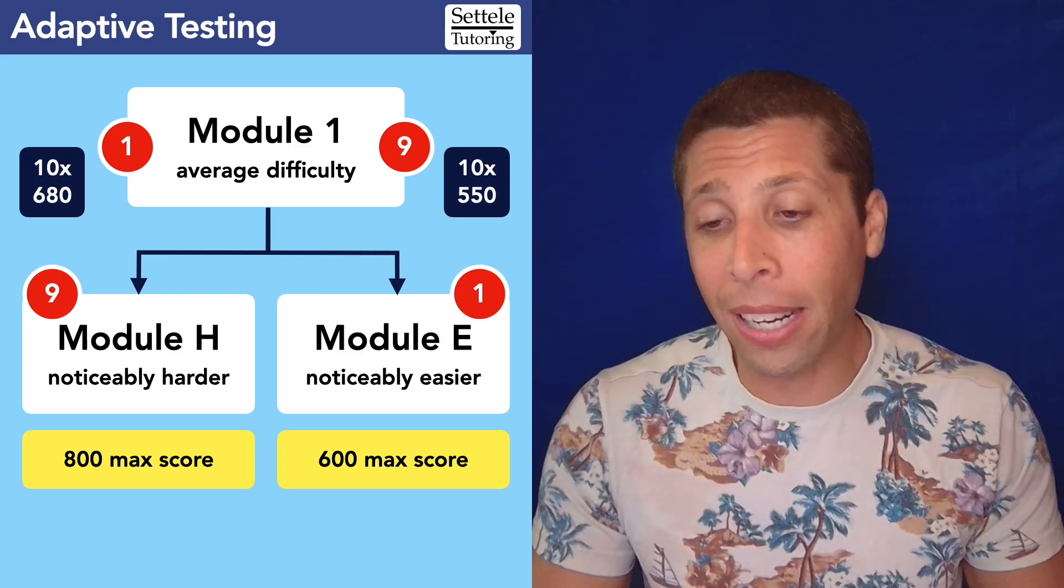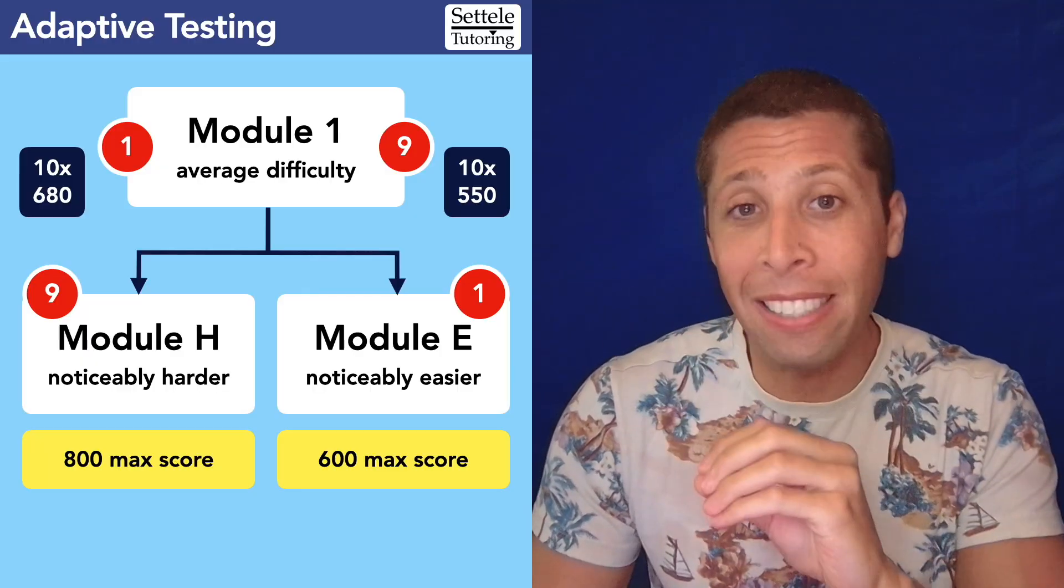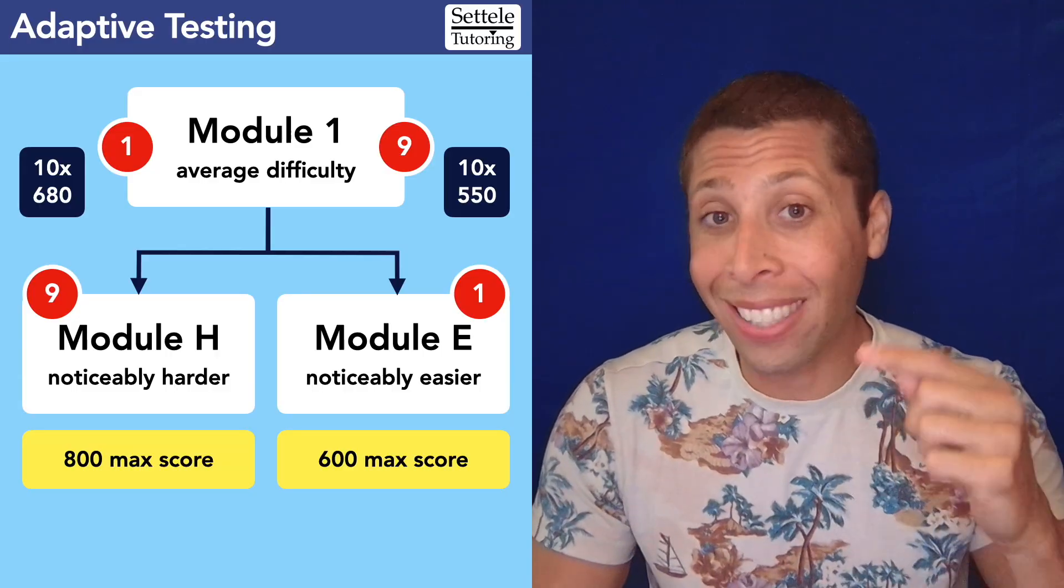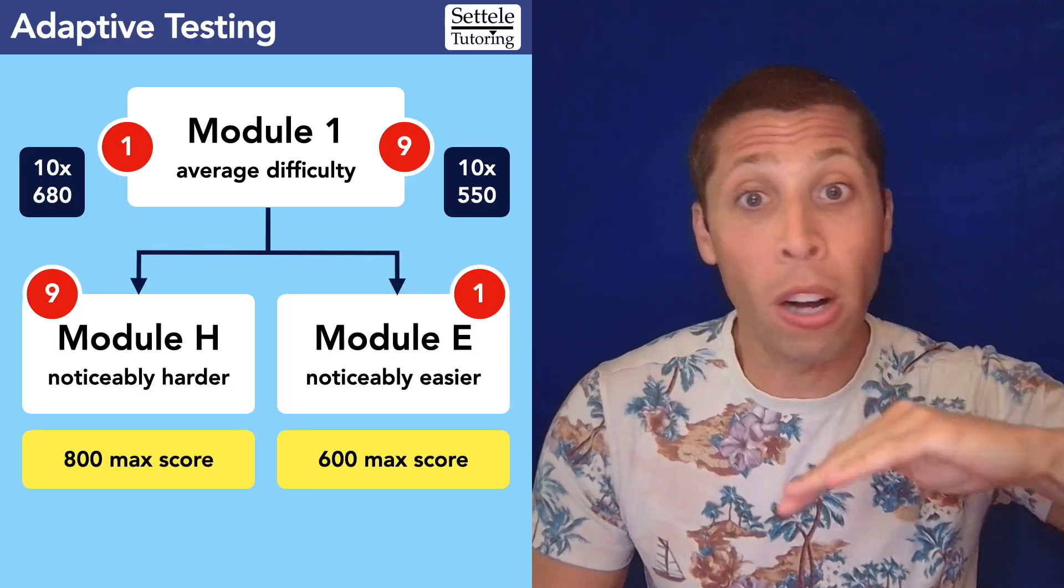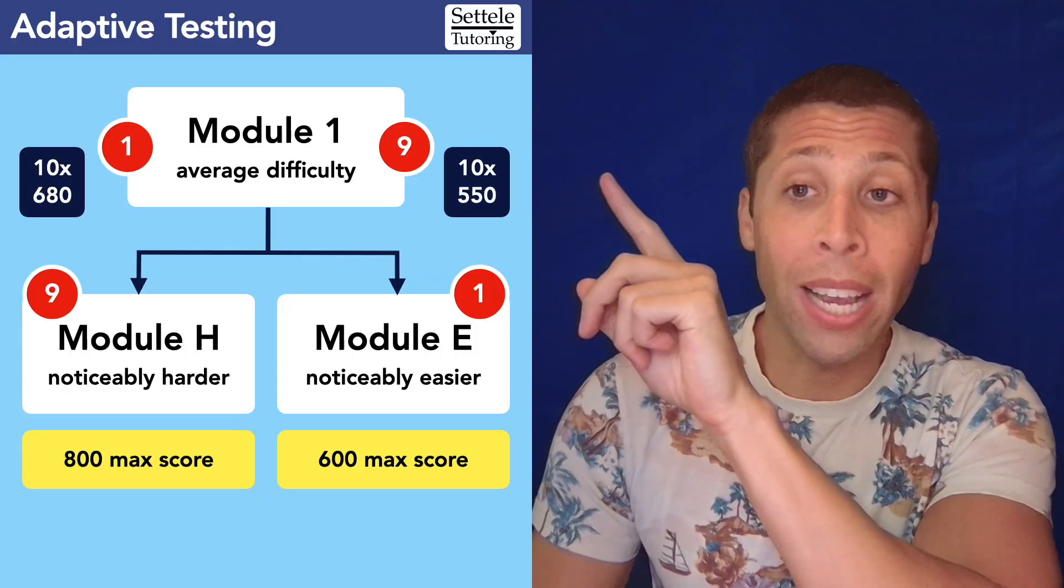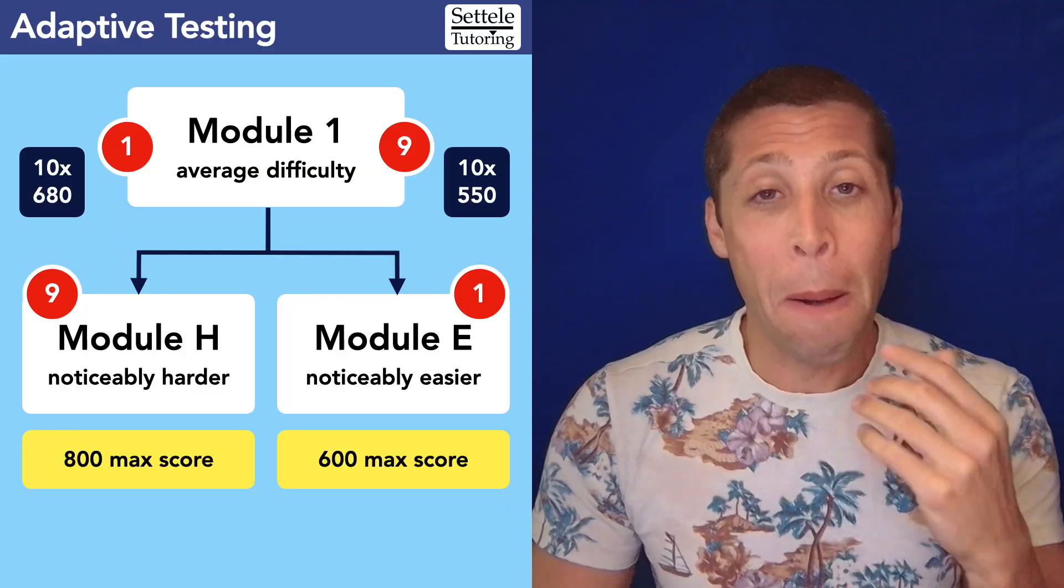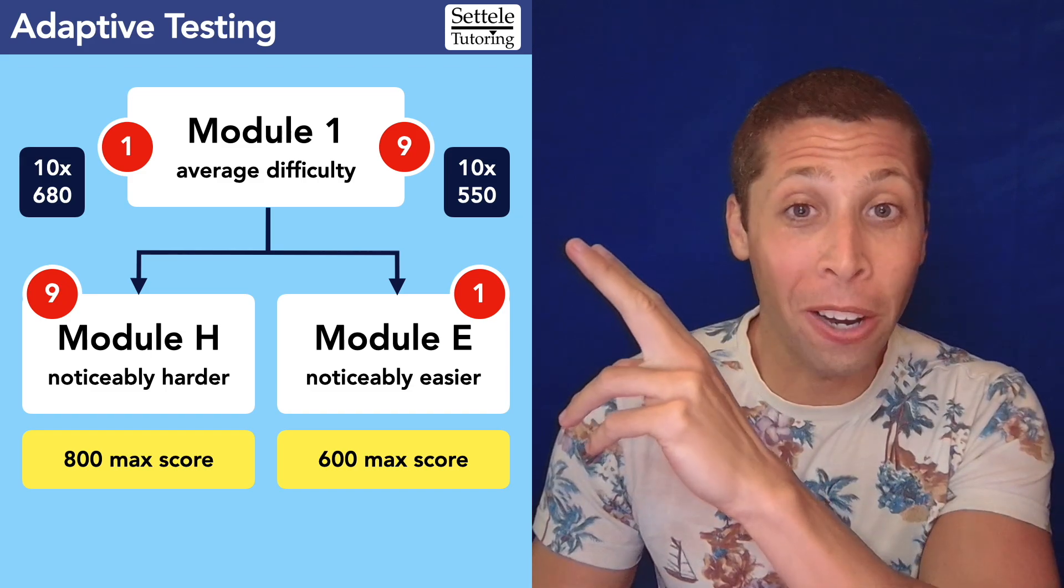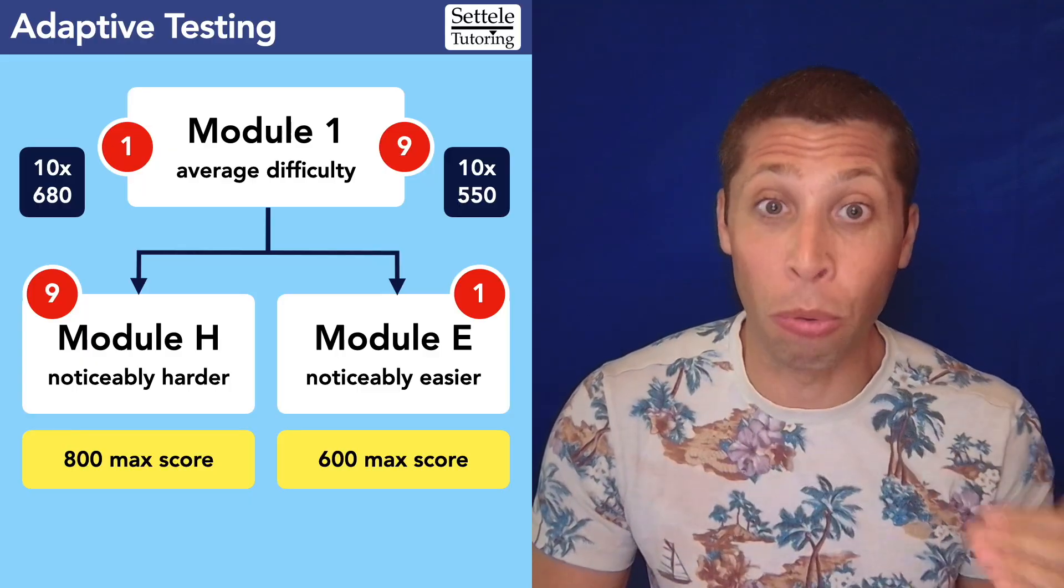But this gets even more complicated if someone is on the cusp and they're just getting into that easy module. And maybe if they get just a few more right, they're going to be placed in the hard one. You might see the score jump a little bit, but also you might see the number wrong change dramatically. For example, if this student here on the right got five more questions right in the first module, then they'd probably get placed in the hard second module. But because they're a 550, 600 level student, you're going to get a lot wrong. So they might go from 10 wrong or five wrong to all the way to like 20 or more than that wrong. So that hard module is going to be rough on them.